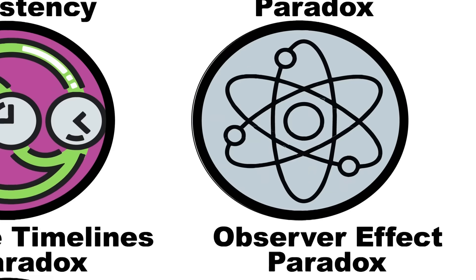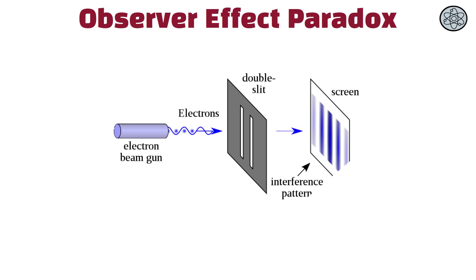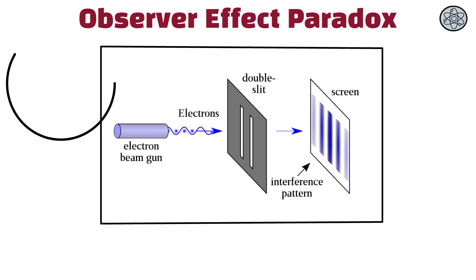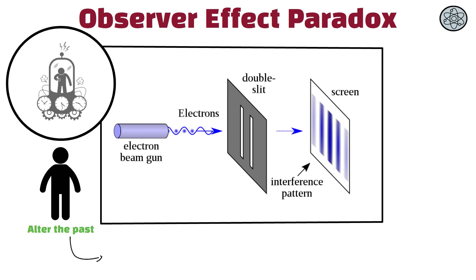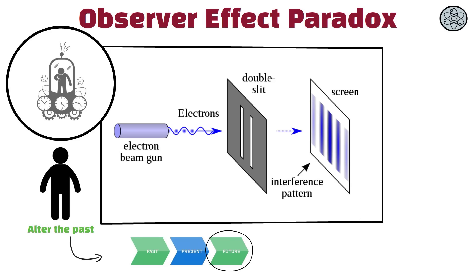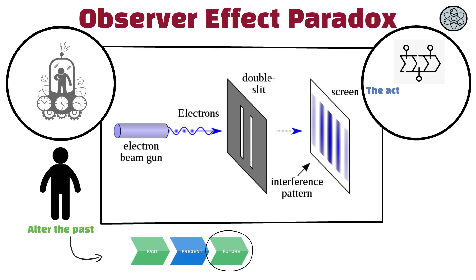The observer effect paradox is based on the quantum mechanics principle that the act of observing a system inevitably changes it. In time travel, the mere presence of an observer from the future could alter the past, potentially changing the future they came from. This creates a paradox where the act of time travel itself changes the timeline.